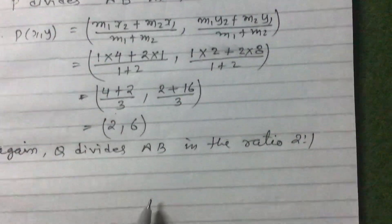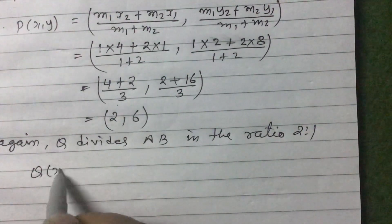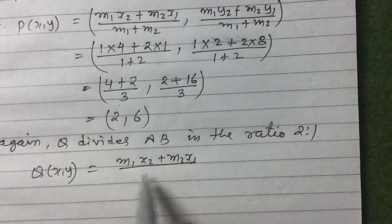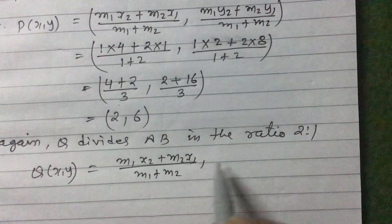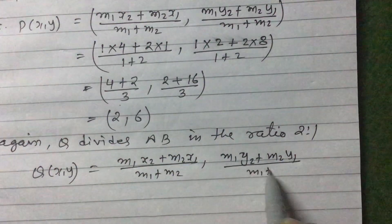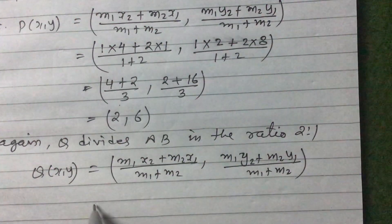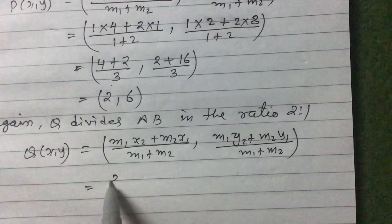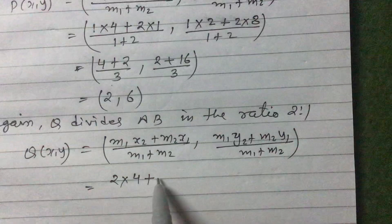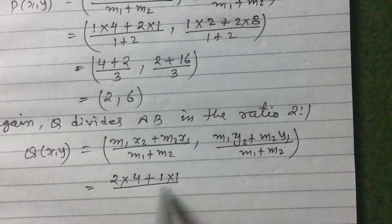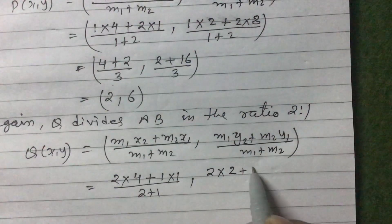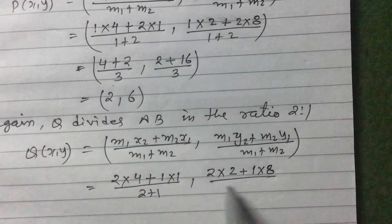Let us use the section formula to find the coordinates of Q. Q(x, y) equals M1·X2 + M2·X1 divided by M1 + M2, comma M1·Y2 + M2·Y1 divided by M1 + M2. Putting values: M1 is 2 times X2 is 4, plus M2 is 1 times X1 is 1, divided by 2 plus 1, comma M1 is 2 times Y2 is 2, plus M2 is 1 times Y1 is 8, divided by 2 plus 1.